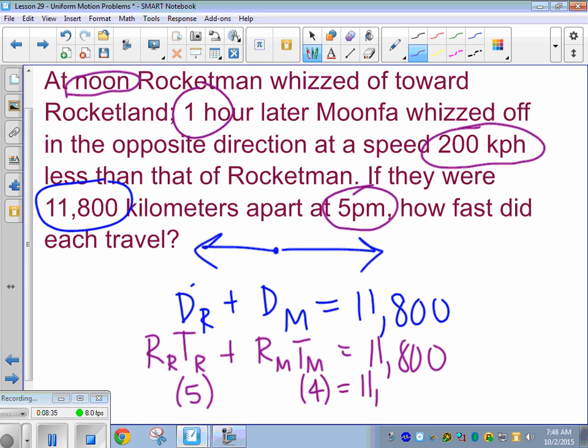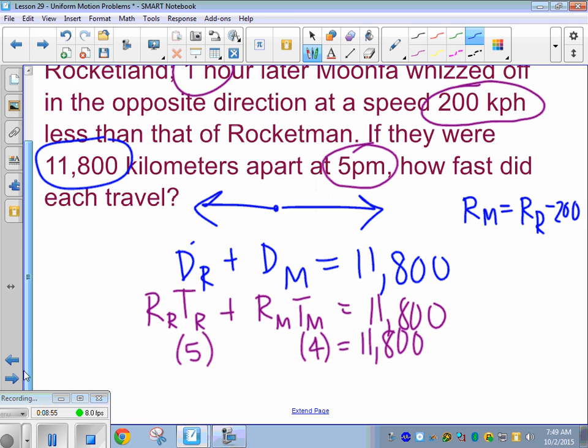Okay. And now we have to figure out their rates. So let's see. Opposite, Moonpha whizzed off in the opposite direction. The speed of 200 kilometers per hour less than that of Rocketman. So that means the rate of Moonpha is equal to what? What? I like it. Okay. Rate of Rocketman minus 200.